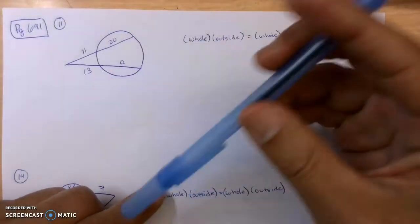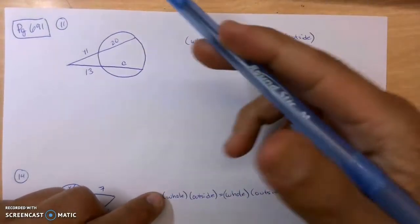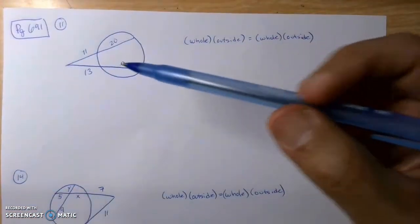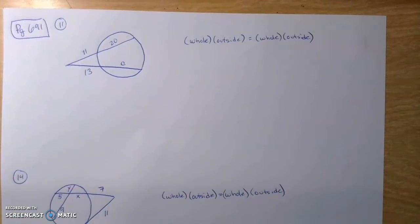Alright, we're going to do some problems here on page 691, but we're going to start with number 11. These are going to be finding the segment lengths within circles. You've got to pay attention whether the segments are inside the circle or outside the circle.